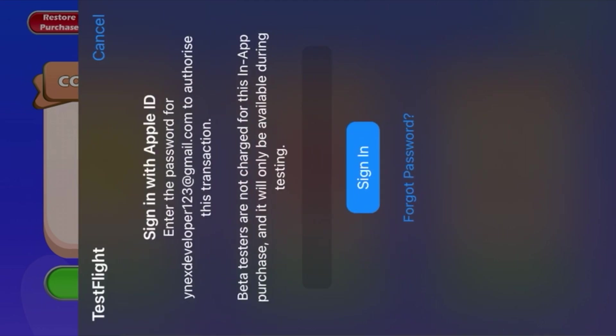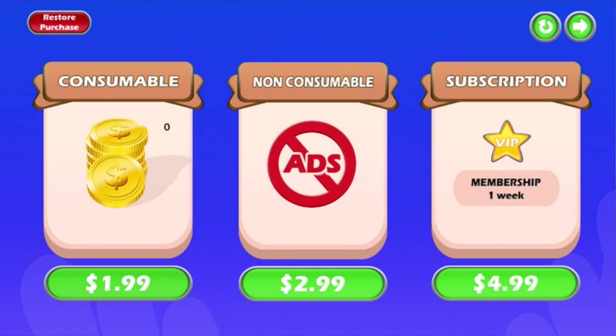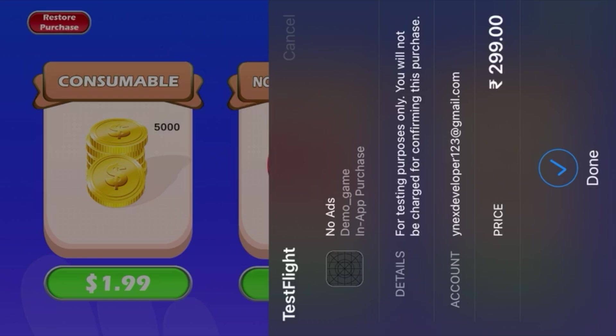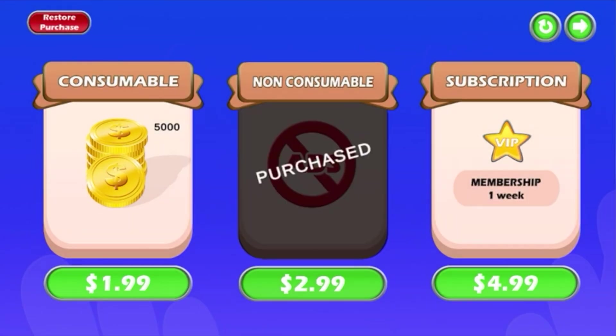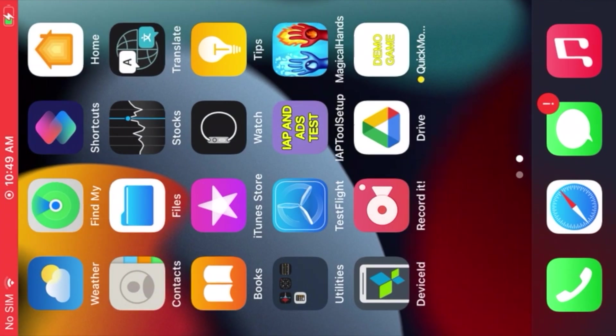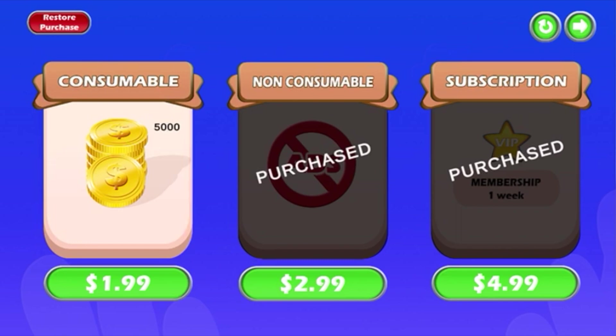Let's first try to purchase the consumable product. Enter your password when prompted — as you can see we received 5000 coins. Now let's purchase the non-consumable item, click Purchase. Now let's purchase the subscription item. We have successfully purchased all three items. Close the application and reopen it — the changes are saved.